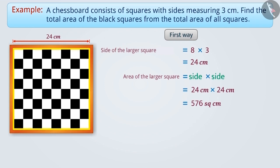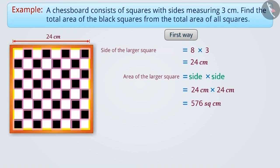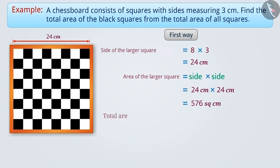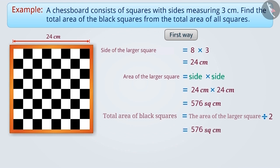Half the region of this larger square is covered by black squares. Therefore, the total area of the black squares is equal to the area of the larger square divided by 2, which is 576 cm² divided by 2, equal to 288 cm².